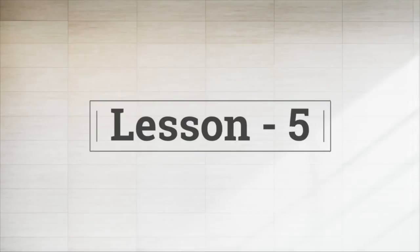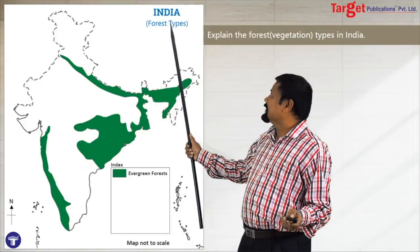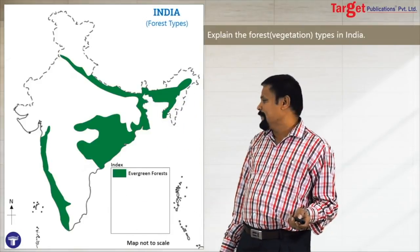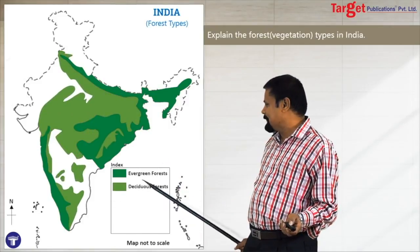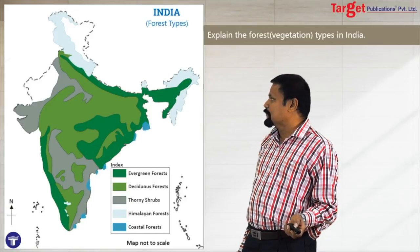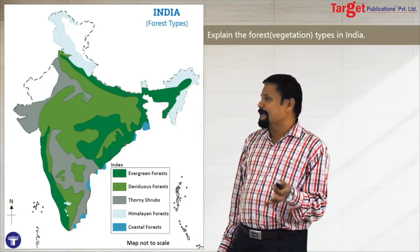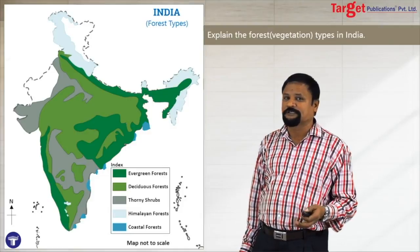Lesson number five is about vegetation. Understand clearly — vegetation means forest; it has nothing to do with vegetables. The question: explain the forest types of India. You can draw evergreen forests, deciduous forests, thorn shrubs, Himalayan forests, and coastal forests. Try to show at least a few forest types. Sometimes you may not be able to do all, but at least two or three forests you can show in the map.